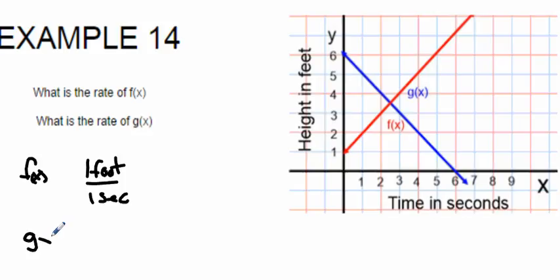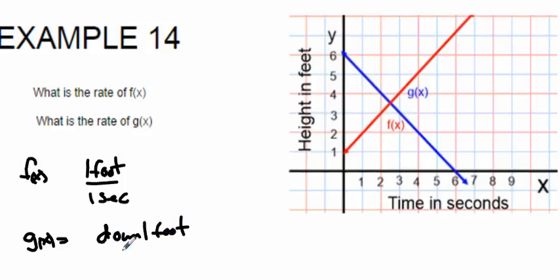g of x, on the other hand, has a negative slope line, so it goes down one foot in one second. I probably should have written up here: f of x is up one foot in one second, g of x is down one foot in one second.